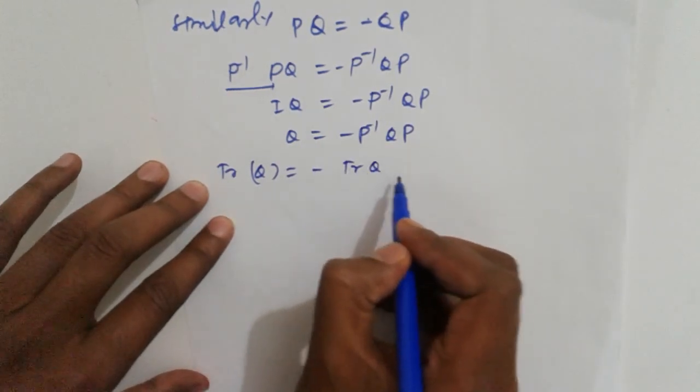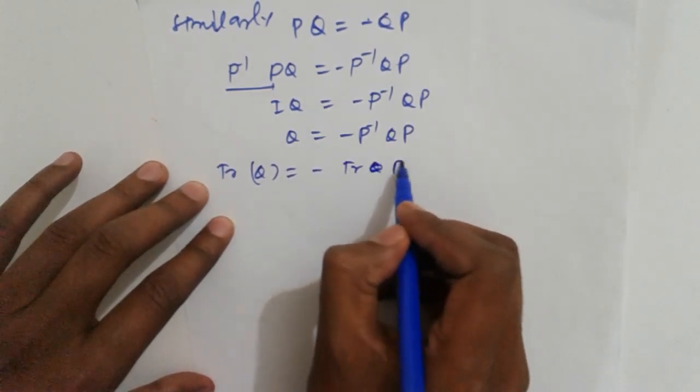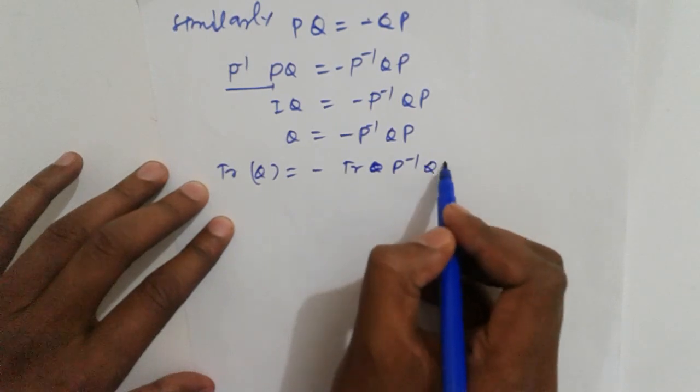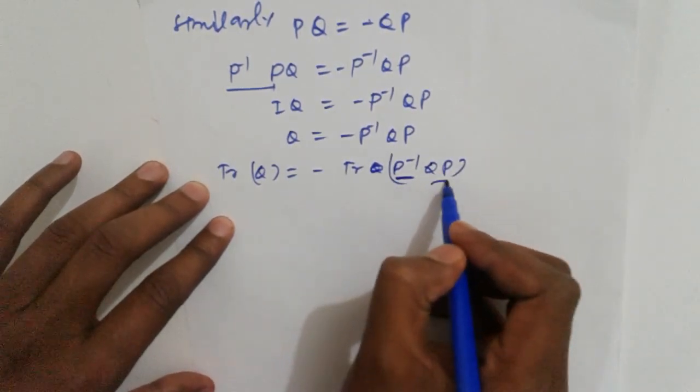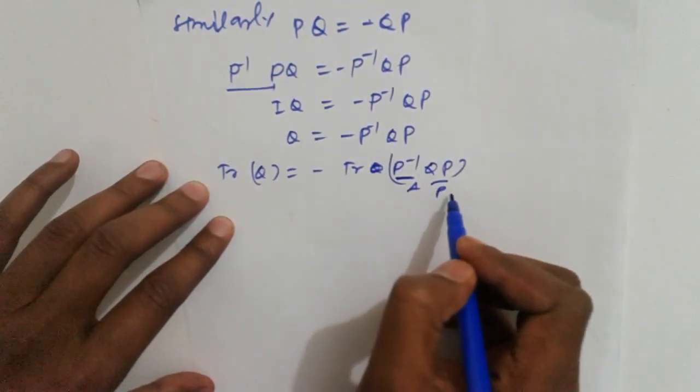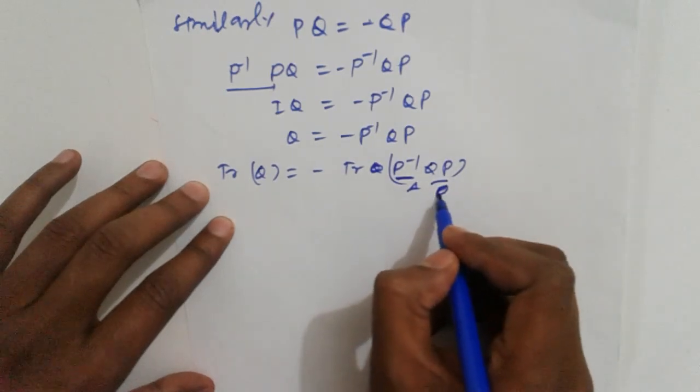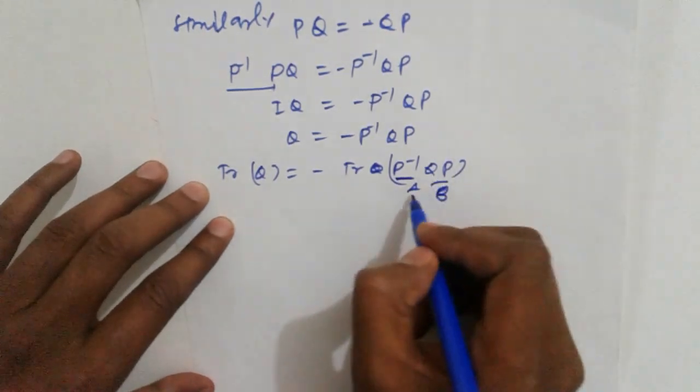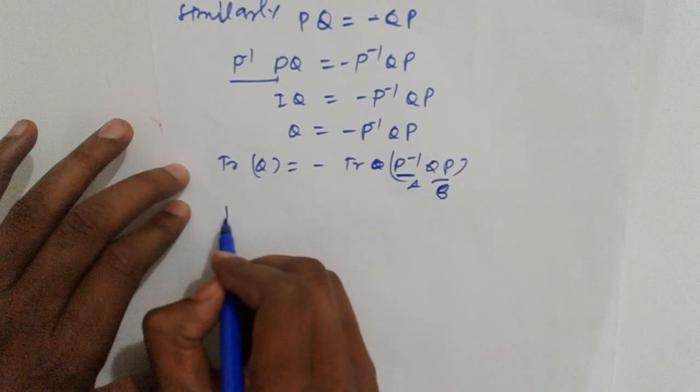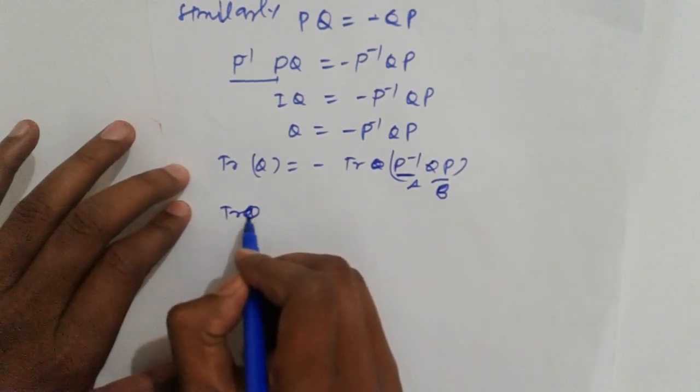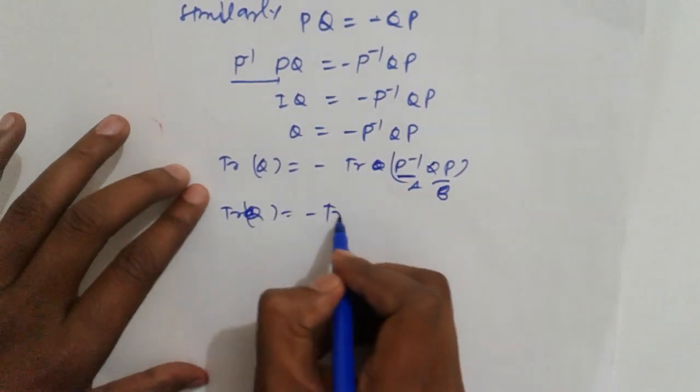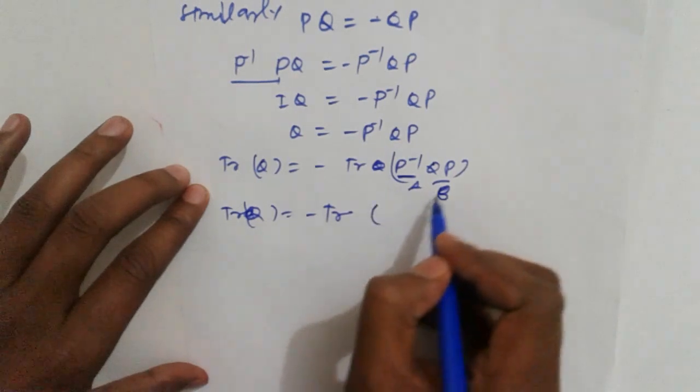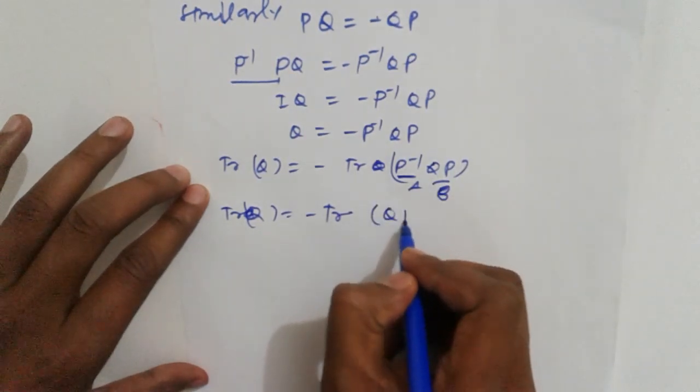Again, using trace of AB equals trace of BA. So trace of Q equals minus trace of QP P inverse.